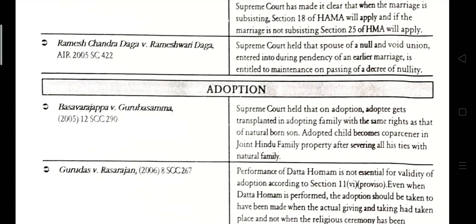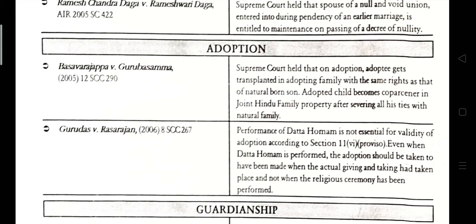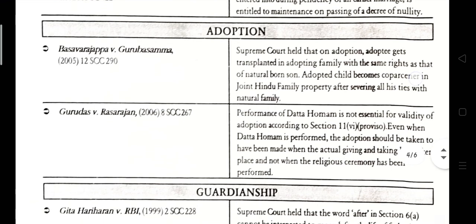Basa Bharapaya vs. Guru Basamaya, 2005, Supreme Court SEC 290. The Supreme Court held that on adoption, the adoptee gets transplanted in the adopting family with the same rights as a natural-born son. The adopted son becomes a co-parcener in the joint Hindu family property after severing all ties with the natural family. Gurudas vs. Ras Rajan, 2006. Performance of the Dattak Khom ceremony is not essential for a valid adoption under Section 11, Clause 4 Proviso. Even when Dattak Khom is performed, the adoption is taken to have been made when the actual giving and taking had taken place, and not when the religious ceremony was performed.